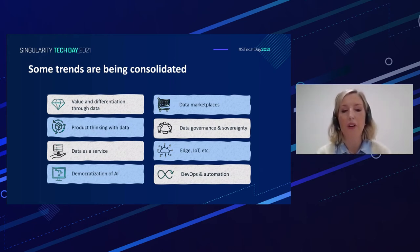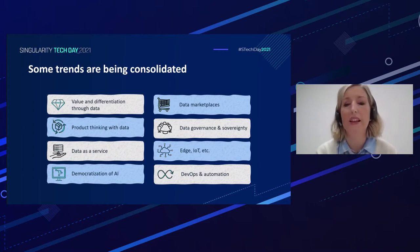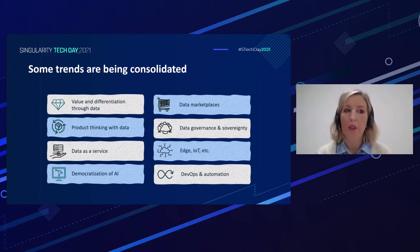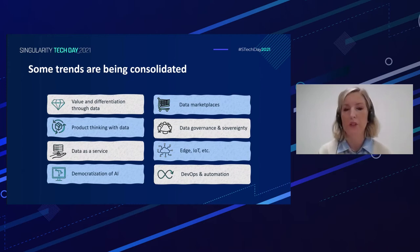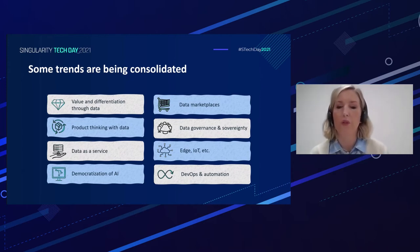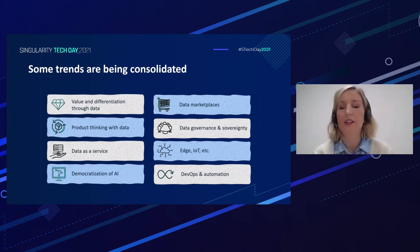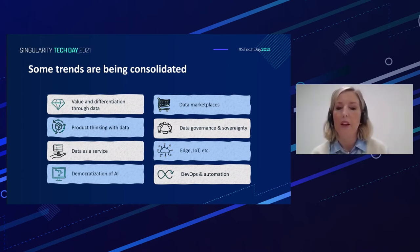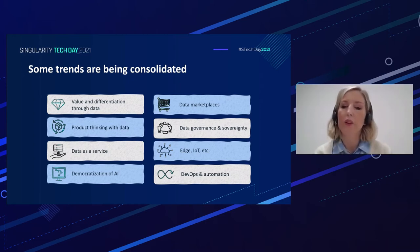Data as a service is an urge to make usage of data widespread, which requires decentralizing and enabling other parts of the company to use the data. The democratization of AI is flattening the barrier to apply AI into the logic of services every day. Data marketplaces go even beyond data as a service — enabling different models to share data, fostering a marketplace effect of producers and consumers. Of course, data governance and sovereignty, edge computing, IoT, and cloud, DevOps, and automation are also key enablers.